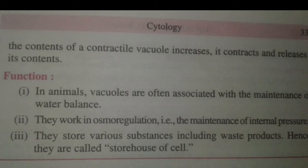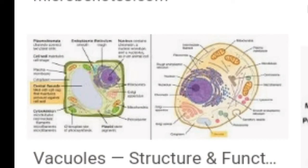Let's look at what a vacuole exactly is. Vacuoles are generally fluid-filled cavities or sacs present in the cytoplasm. The watery fluid of the vacuole is called the cell sap. Vacuoles are surrounded by a single membrane called the tonoplast. In plant cells, the number of vacuoles is more and the size is bigger in comparison to animal cells.